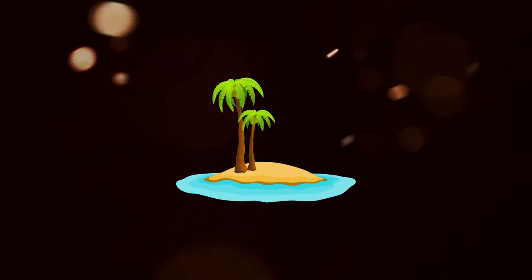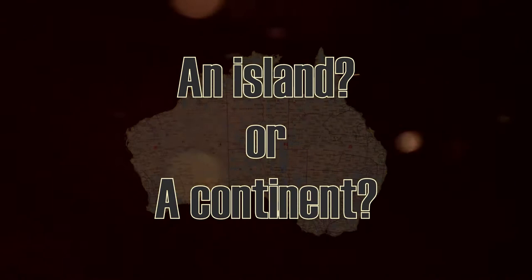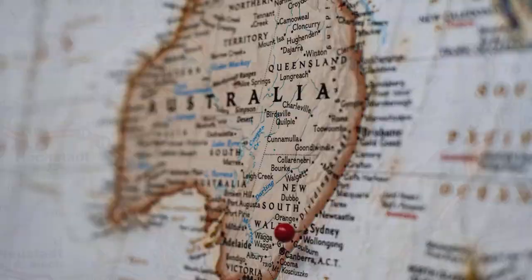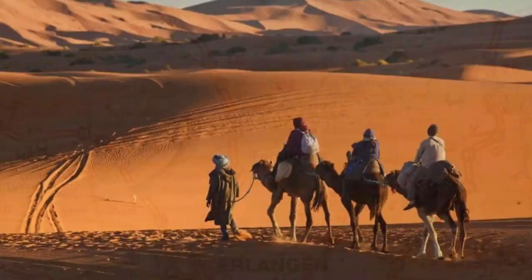And what about the opposite? What about large portions of land? Usually people only argue about this case in particular: Australia. And today we'll explore this topic, geographers of the world. Should Australia be considered an island or a continent?